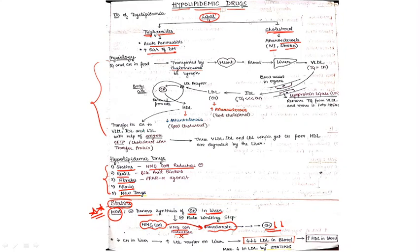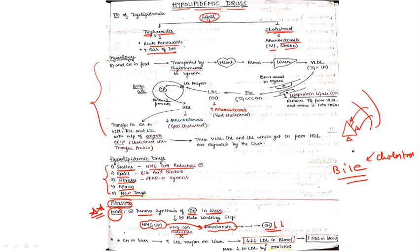Since cholesterol is needed to synthesize bile, and the liver cannot synthesize enough cholesterol, the liver will increase its LDL receptors on its surface. From the blood, LDL is absorbed into the liver and used for bile synthesis. So decreased cholesterol in the liver increases LDL receptors on the liver, which decreases LDL in the blood.